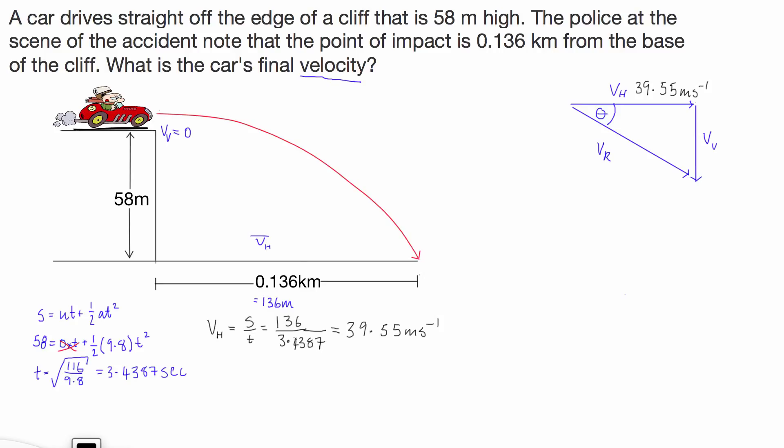The next thing that we have to work out is the vertical velocity at the end point. Now we know that the initial velocity is 0, we know the time that we have, and we know what the acceleration is. So we can use the formula v is equal to u, the initial velocity, plus the acceleration times the time.